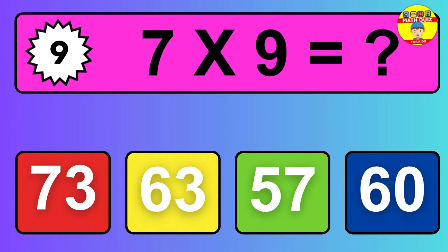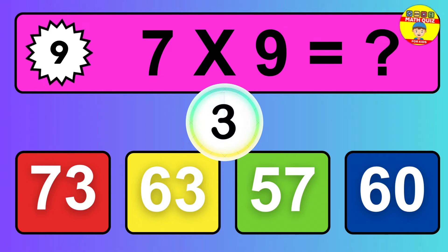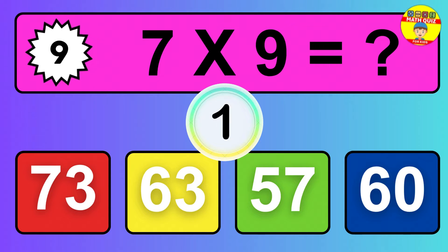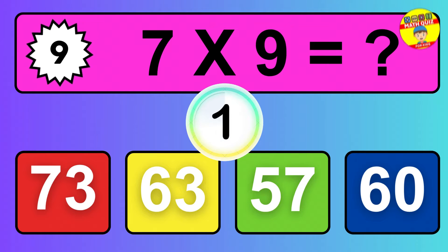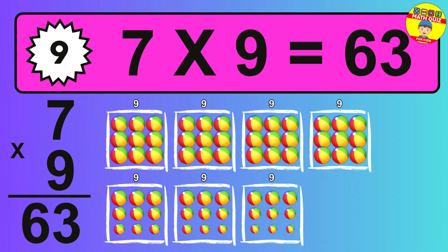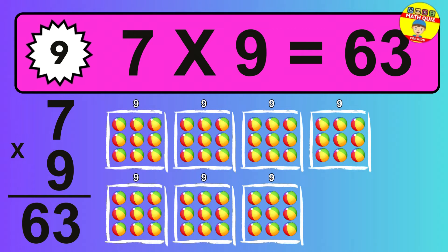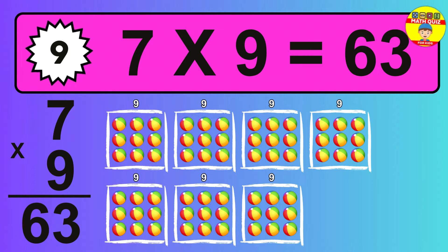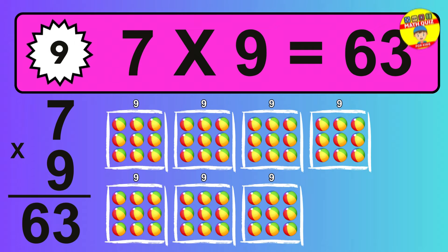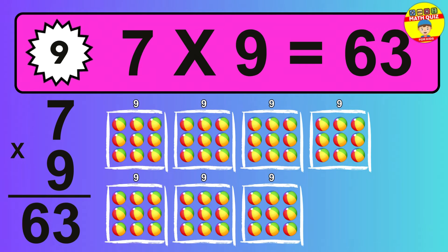Question 9. 7 times 9 equals what? The answer is 7 times 9 is 63. To calculate, we have 7 groups with 9 balls each one. So, how many balls do we have? 63 balls.